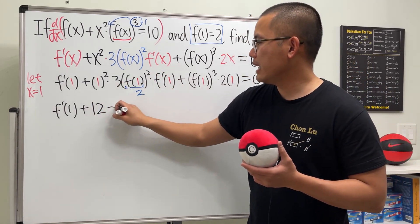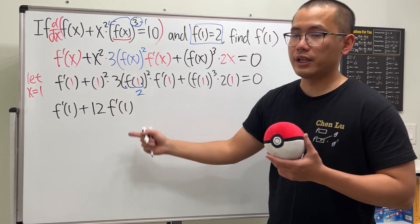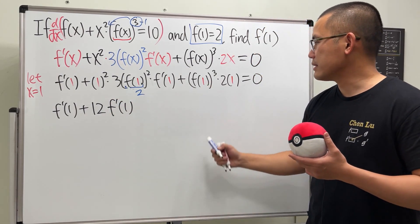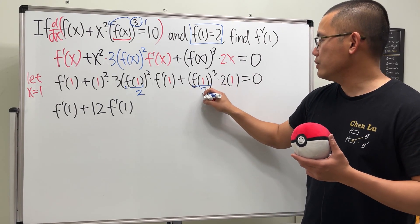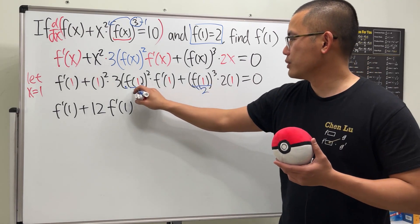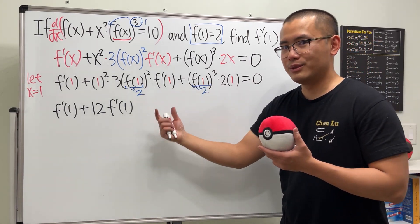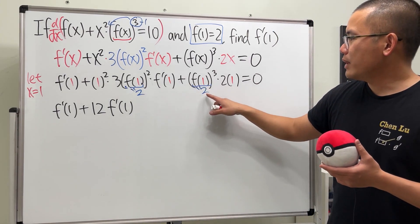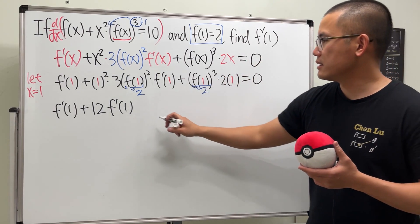And we multiply by f prime of 1, which we don't know yet. And then again, here we have the same thing. This is 2, right? This is equal to 2. I still want to put on the equal sign to make it better. Otherwise it looks like a division. Anyway, 2 to the third power is 8, times 2 is 16.